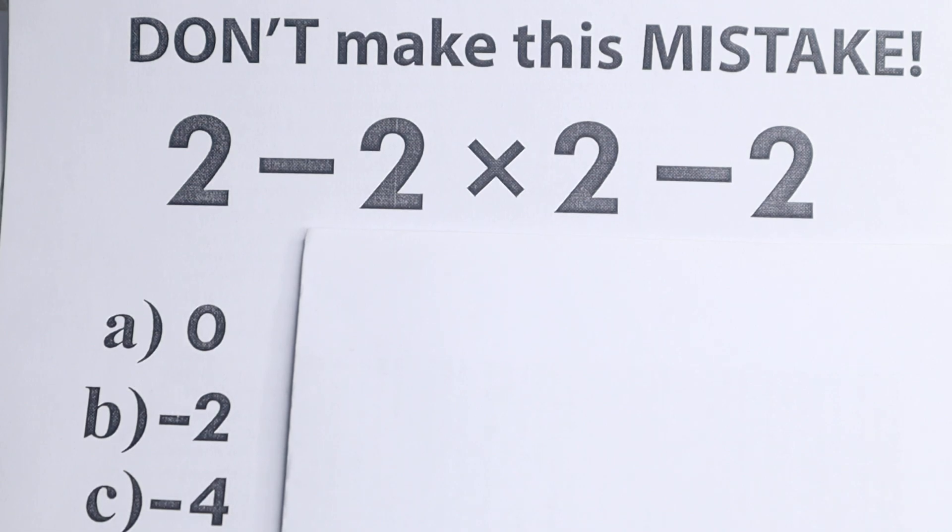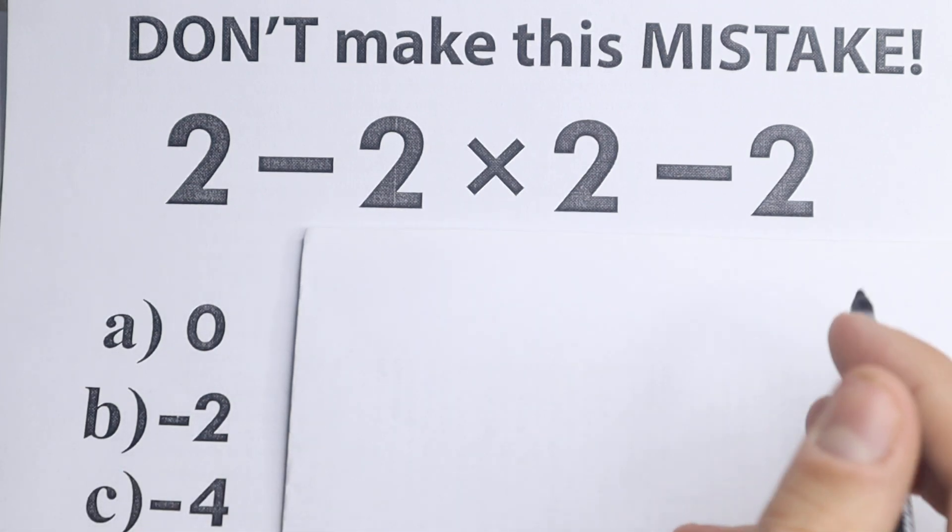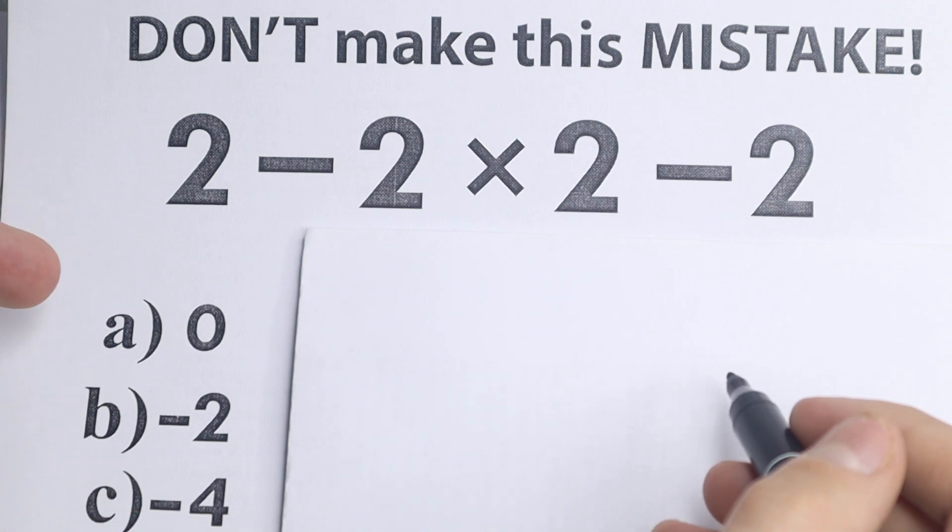So here is a problem today: 2 - 2 × 2 - 2. Let's try to solve it correctly, but before I do, I suggest you solve it by yourself and write your option down in the comment section.